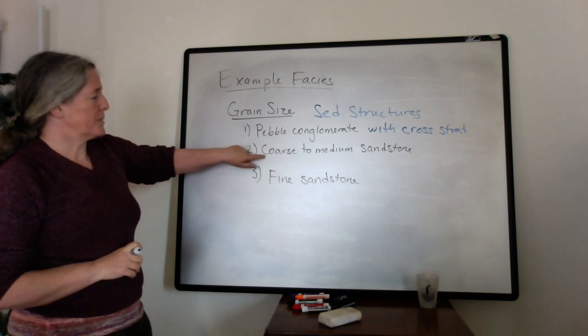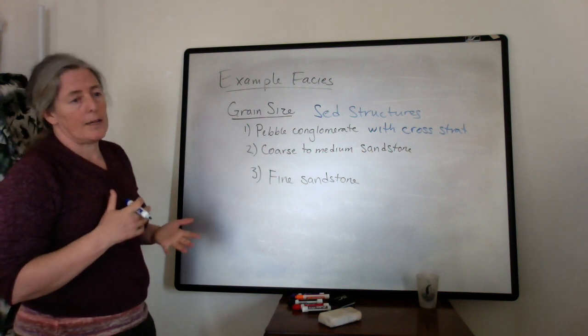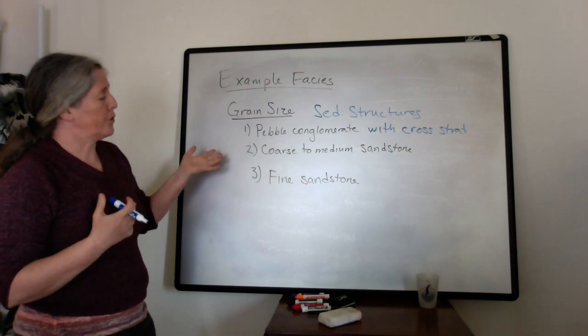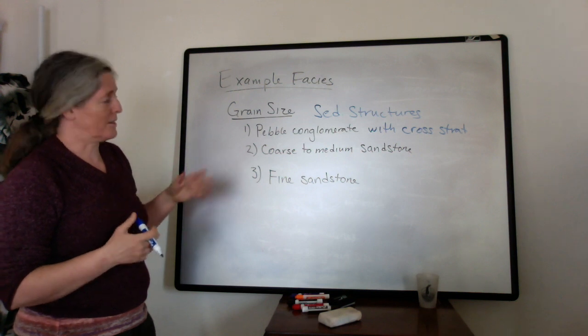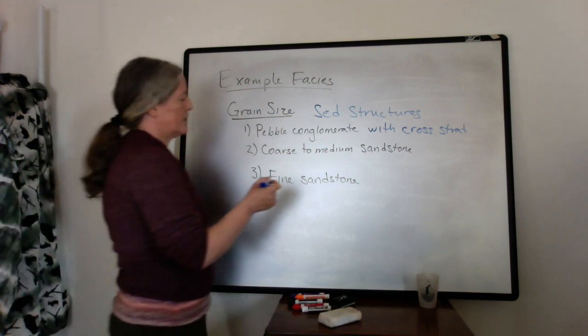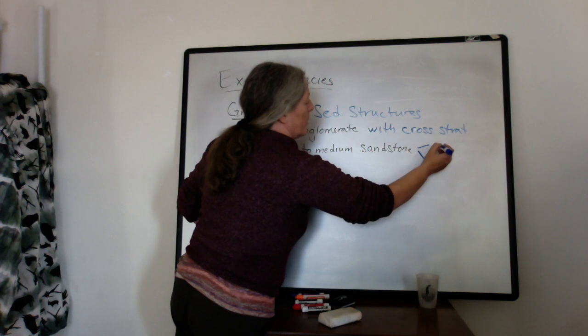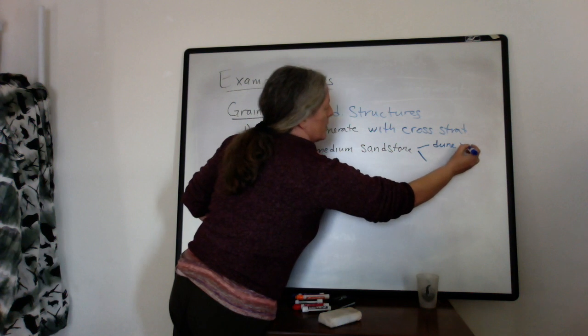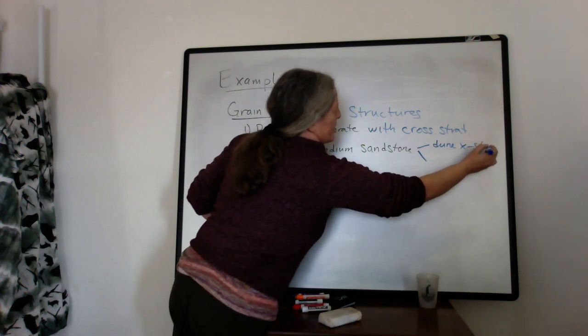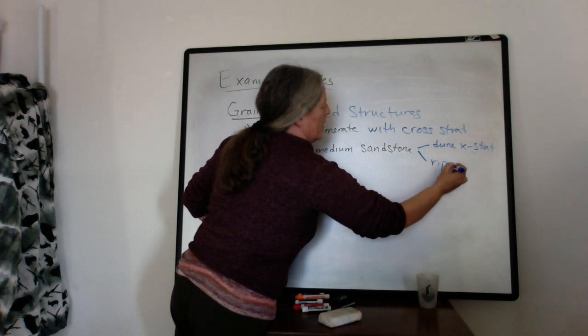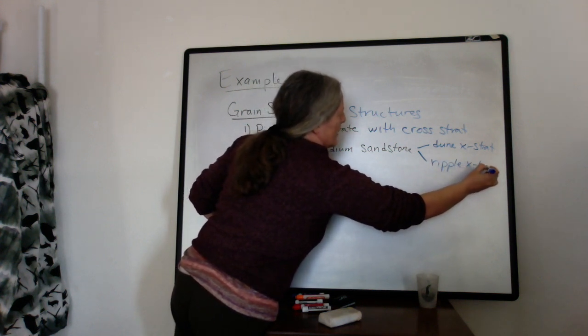The coarse to medium sandstone could either be at the flow speed of dunes or ripple cross laminated. So maybe if I was actually doing this, the sedimentary structures I would make, I might divide this into two, one with dune cross stratification, and maybe one with ripple cross lamination.